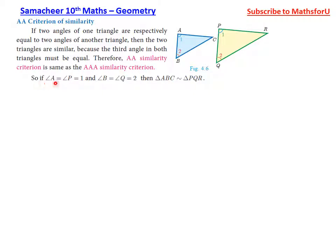If angle A equals angle P and angle B equals angle Q, then triangle ABC is similar to triangle PQR. Two angles being equal means automatically three angles are equal. So this is the AAA (Angle-Angle-Angle) property.